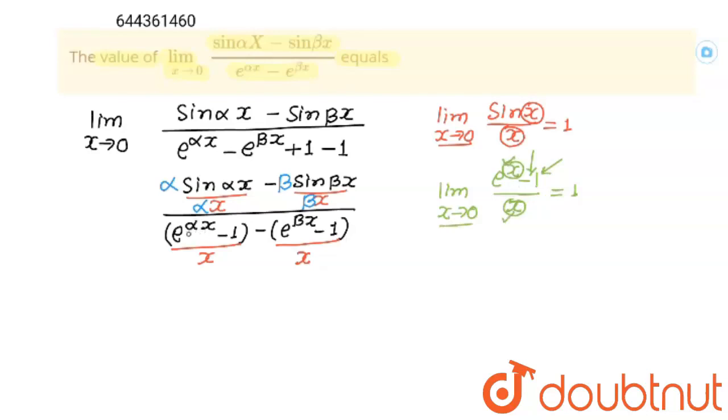Then this value is 1 and at this limit this term and this term both should tend to 0. Now in degree this is alpha x, so I am going to multiply and divide alpha. And here this is beta x, so I am going to multiply and divide beta.